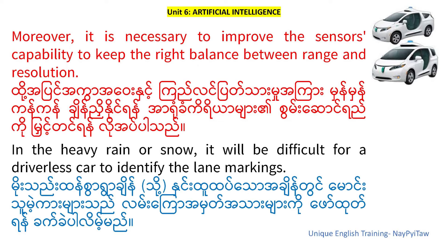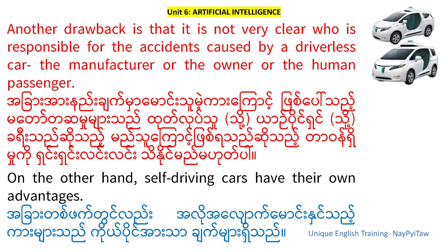Moreover, it is necessary to improve the sensor's capability to keep the right balance between range and resolution. In the heavy rain or snow, it will be difficult for a driverless car to identify the lane markings. Another drawback is that it is not very clear who is responsible for the accidents caused by a driverless car — the manufacturer, the owner, or the human passenger.